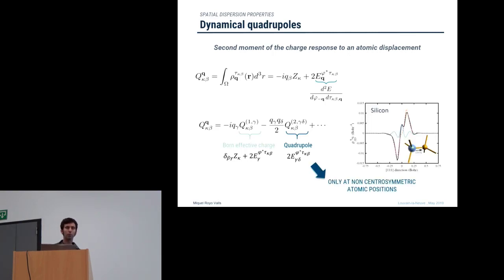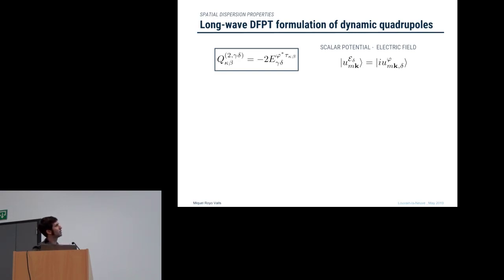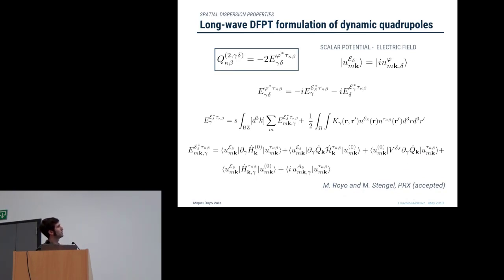The dynamical quadrupoles can be considered as a spatial dispersion property of the Born effective charges. This quadrupole response is only active in materials with non-centrosymmetric atomic positions, for example in silicon. To calculate the quadrupoles, we take the second gradient of a second-order energy derivative with respect to the scalar potential and the atomic displacement. We can exploit the relationship between the gradient of the scalar potential perturbation and the electric field, ending up with a similar set of equations — with the new object being the first gradient of the atomic displacement Hamiltonian.